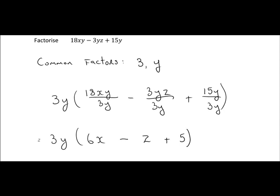So that's our expression factorized, with 3y outside multiplied by 6x minus z plus 5.